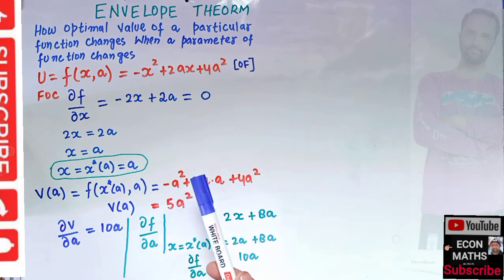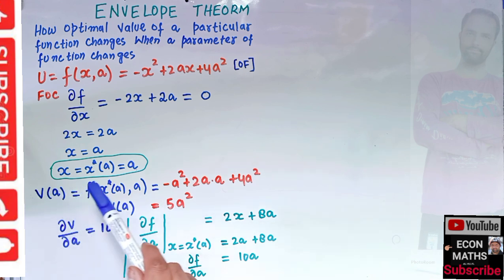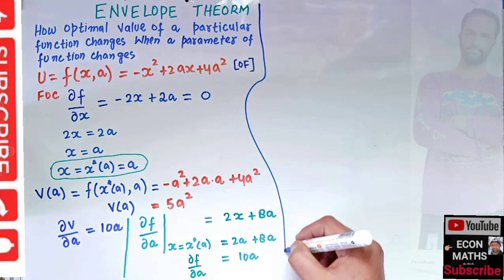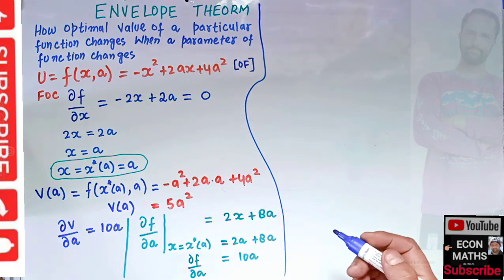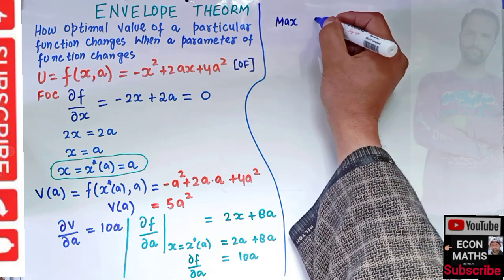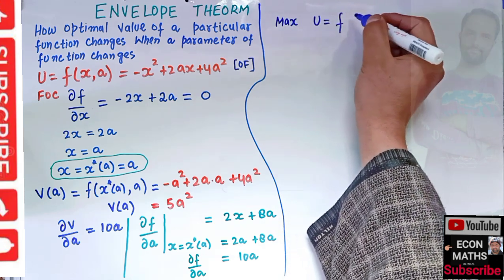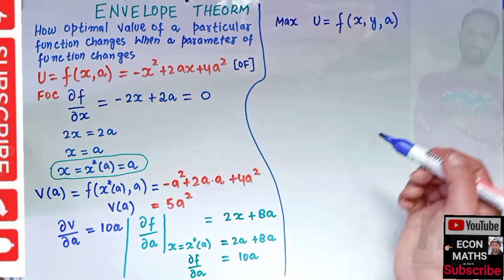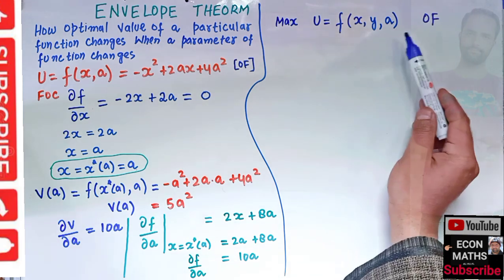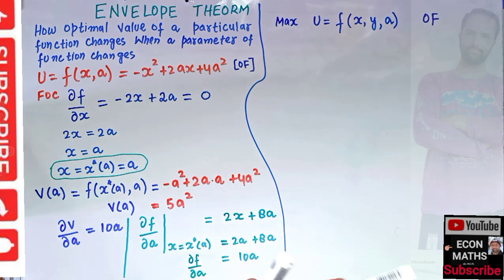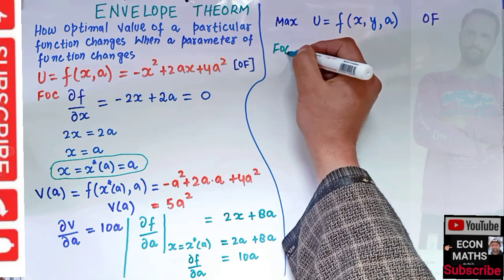You get the same result as if you had formed the optimal value function and taken its partial derivative with respect to the parameter. Now let's write this in general form. Suppose we want to maximize a utility function u of two variables x and y, and a parameter a.